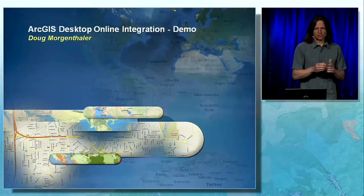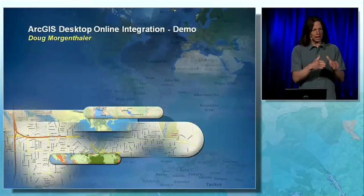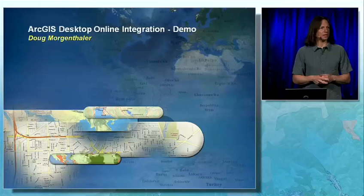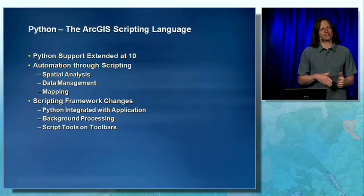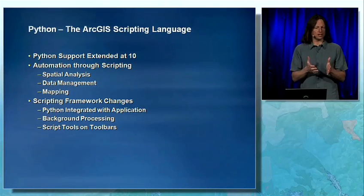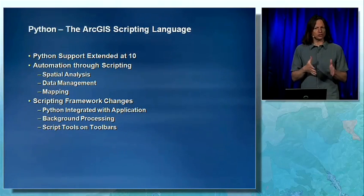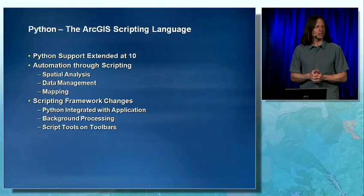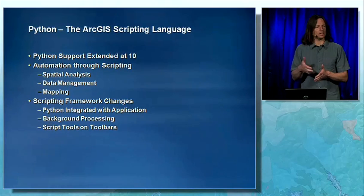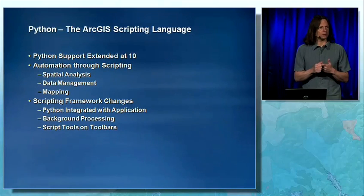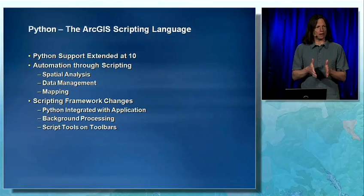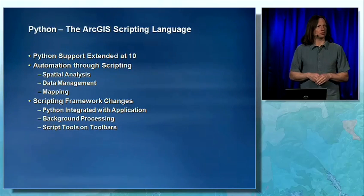One thing I'd like to stress is that all of this can be automated with Python — even the uploading of the package to the online website. There's a Python tool to do that at version 10. We really see Python as the ArcGIS scripting language. We've worked on Python improvements over a number of releases. Traditionally, you've used Python to script together geoprocessing tools to automate spatial analysis operations and data management tasks. At version 10, we've added new tools to improve data management work, and I'm really excited about the new mapping capabilities — you'll be able to automate the creation of maps with scripting in Python.